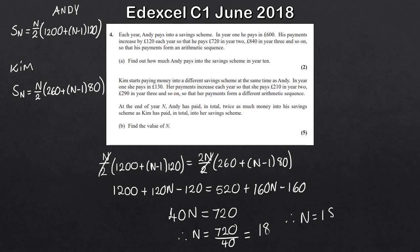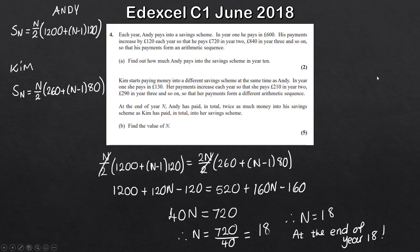So N equals 18 - at the end of year 18, Andy has paid in total twice as much as Kim. A bit of a longer one, but hopefully mathematically not too bad. Hope this video has helped - if there are any issues or anything that's unclear, just leave a comment below.